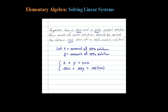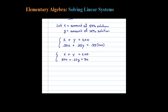This is our setup. Now let's go ahead and solve. I'll multiply 0.35 times 200, so we have: X + Y = 200, and 0.50X + 0.25Y = 70.